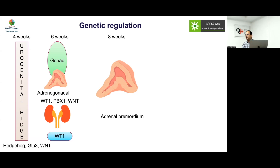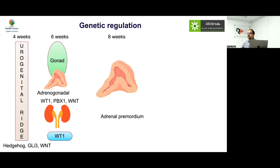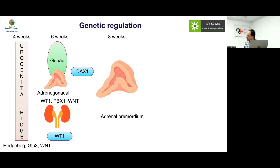The major role of the fetal adrenal is to act as a factory supplying raw material to the placenta: it produces DHEAS, which the placenta converts via aromatase into estriol, which then enters the mother's circulation. Estriol levels are therefore a marker of fetal adrenal function and are measured as part of the triple marker screen. Low estriol levels can indicate adrenal insufficiency or conditions like MPHD with absent DHEAS production.